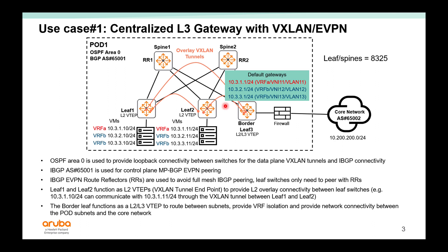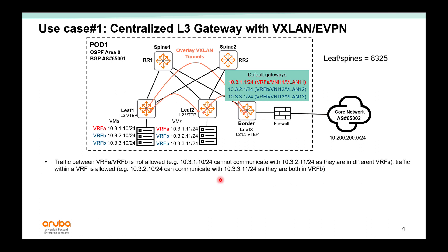The border leaf functions as a layer 2 and layer 3 VTEP because it routes between the subnets. It also provides connectivity to the core network out of the pod. In this example, I have two VRFs: VRF A, the red VRF, and VRF B, the blue VRF. Traffic between each VRF is not allowed. For example, 1.10 cannot communicate with 2.11 because they are in different VRFs, but 2.10 can communicate with 3.11 because they are in the same VRF B.